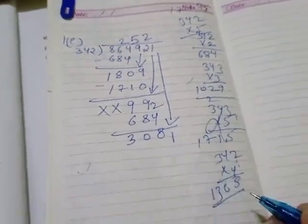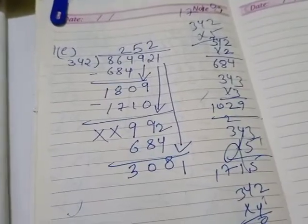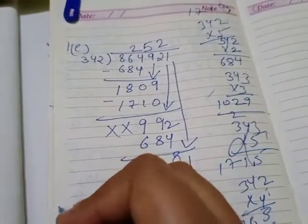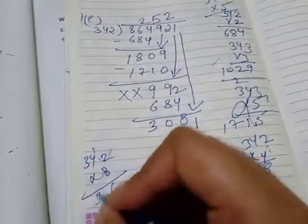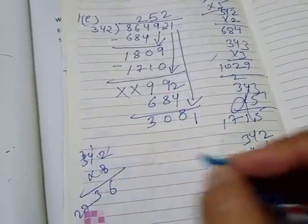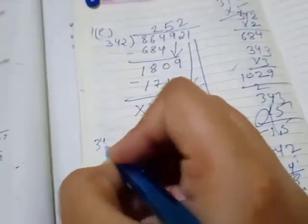So how many times we can see? We will directly go till 8 times. Okay, 342 into 8: 2s are 16, 8 4s are 32, 33, 8 24, 27. We are on 27. Once we will see with 9 also.